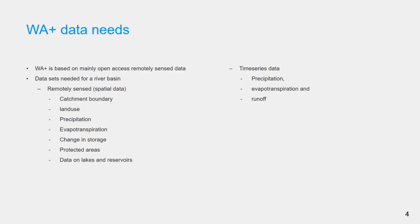Water Accounting Plus is based on mainly open access remotely-sensed data. We can classify this data broadly as remotely-sensed spatial data and time-series data of in-situ measurements. The remotely-sensed spatial data include catchment boundary and data on land use, precipitation, evapotranspiration, and change in storage data, and data on protected areas, lakes, and reservoirs. Time-series data such as precipitation, evapotranspiration, and runoff, if available, can be used to validate the results of the Water Accounting study.